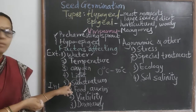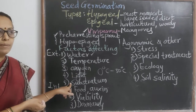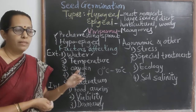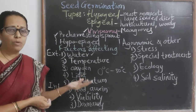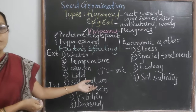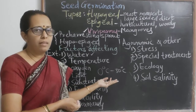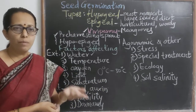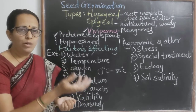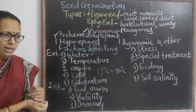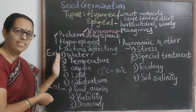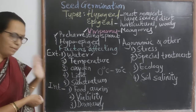The next external factor is substratum. Whenever we germinate seeds, a medium is required. In natural conditions we grow them in soil, but in the laboratory we provide a substratum like tissue paper or blotting paper kept moist in petri dishes. This substratum is also an important factor affecting seed germination.